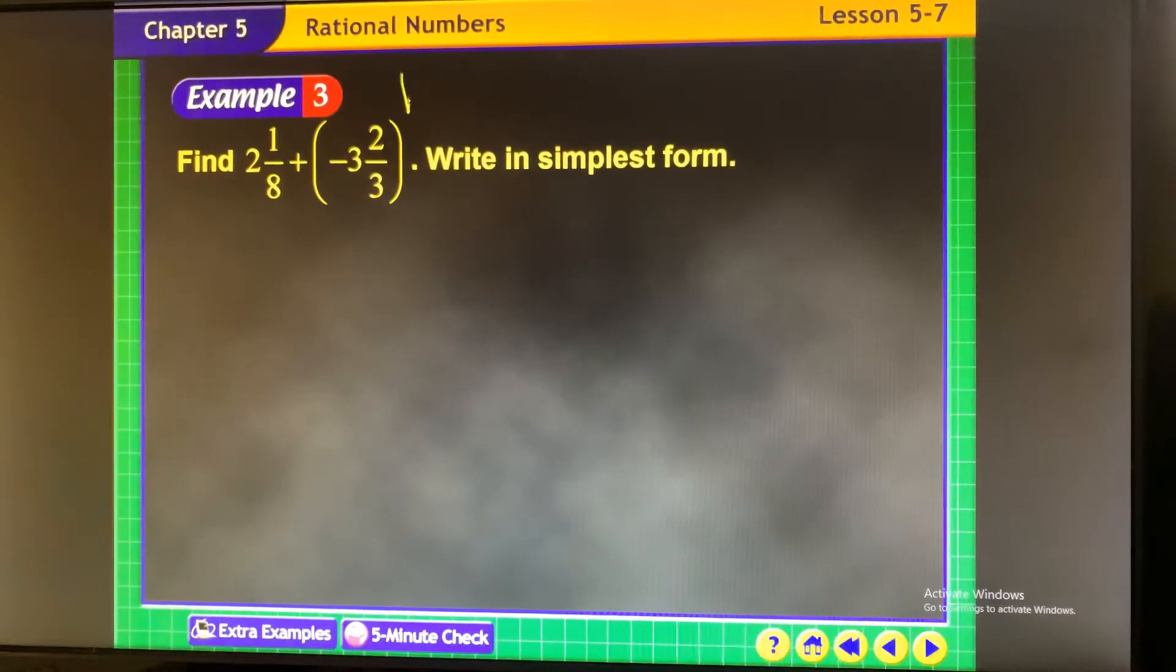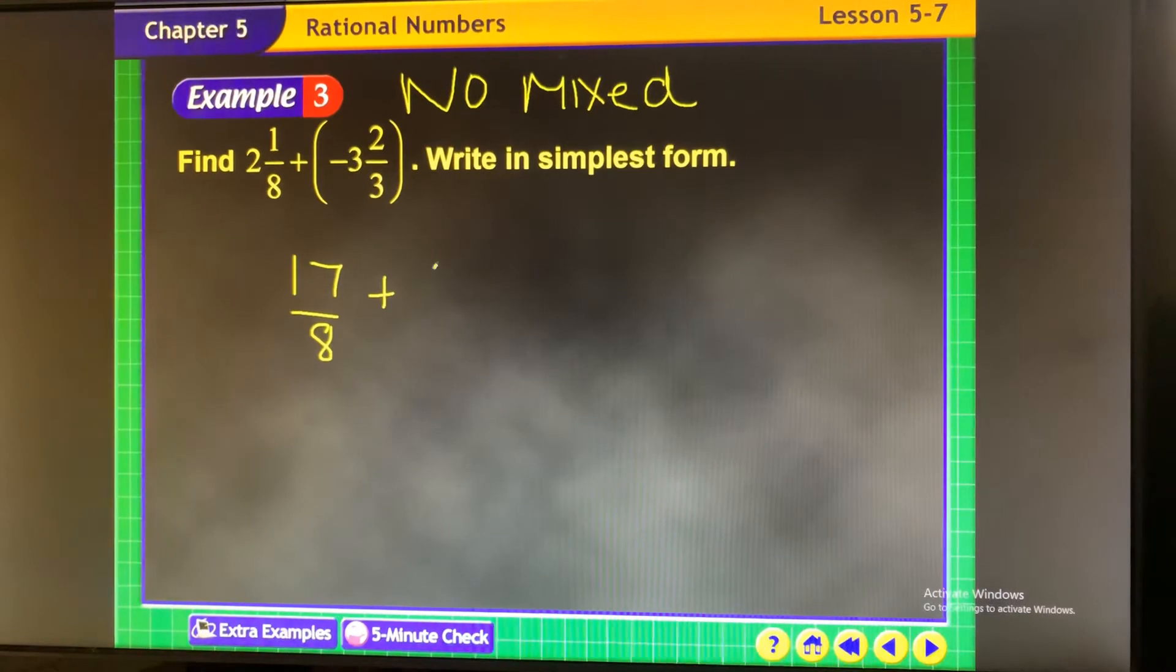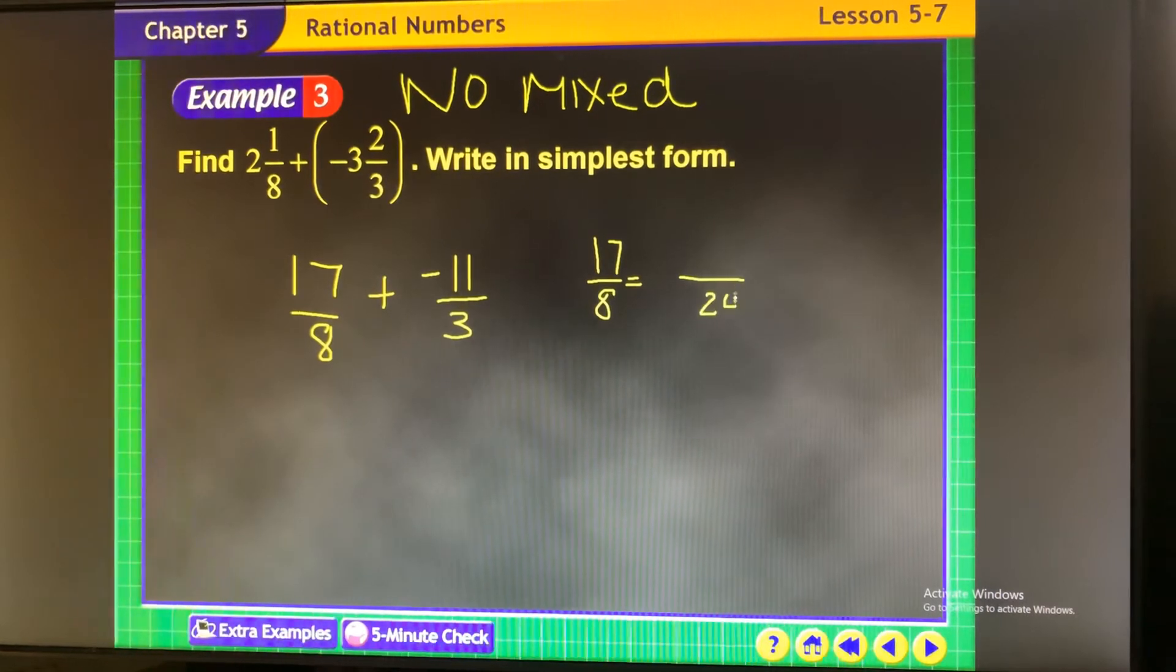Remember, no mixed numbers when we're dealing with negatives. Only fractions. So you're going to take and change these into 17 eighths plus negative 11 thirds. And then go ahead and find your common denominator. So 17 eighths equals 24. Then you're going to do times 3 here. 51.